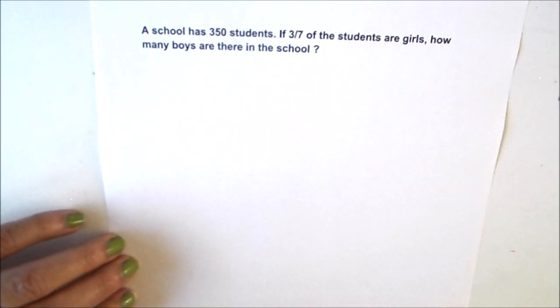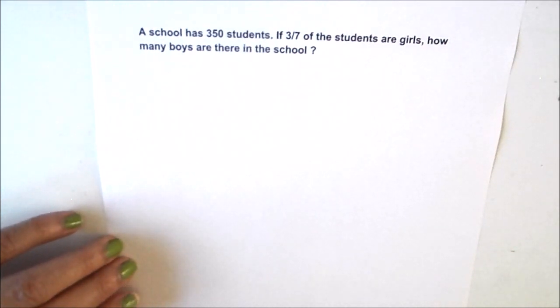We have been given the ratio or the fraction of girls in the school and we need to find the ratio or the fraction of boys in the school. The total number of students in the school is given as 350.